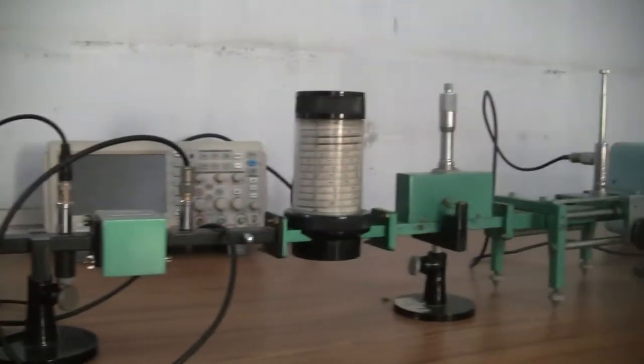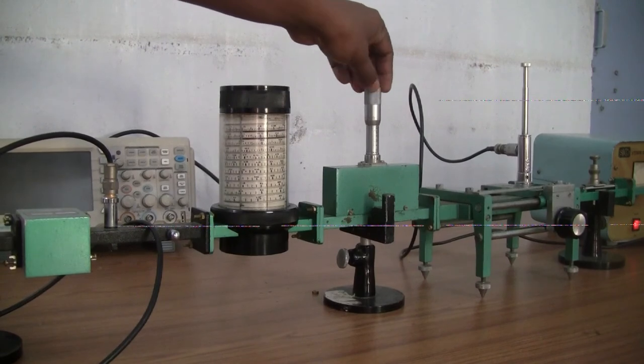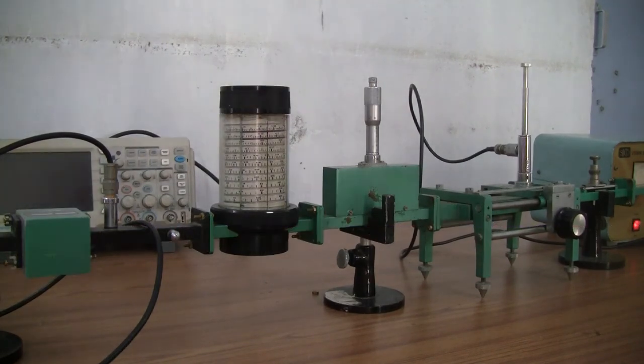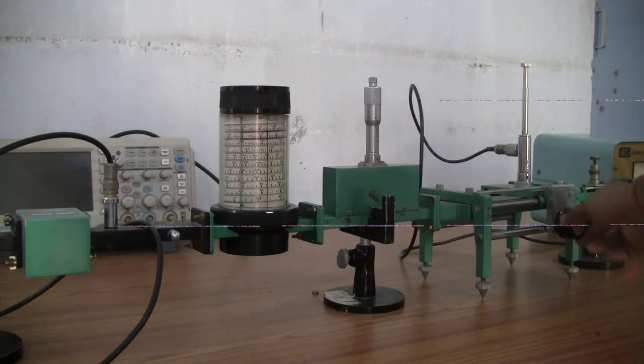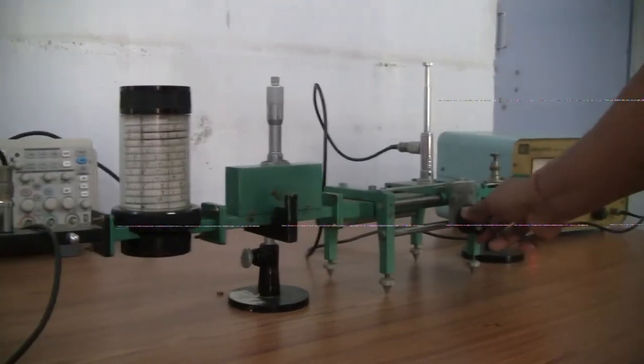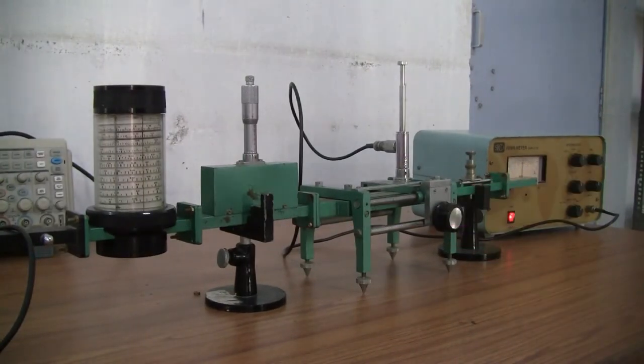Keep the variable attenuator at 25 mm, which means zero attenuation. Keep the slotted line at extreme right position. Adjust the tunable probe for coupling.